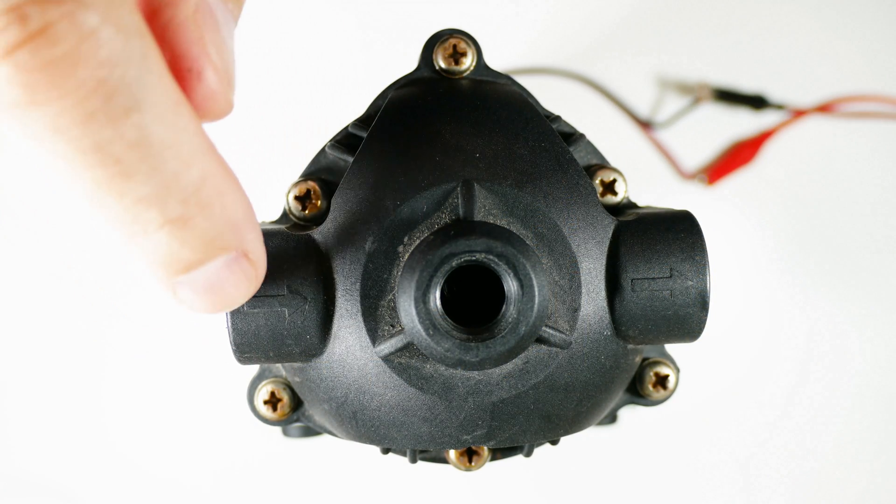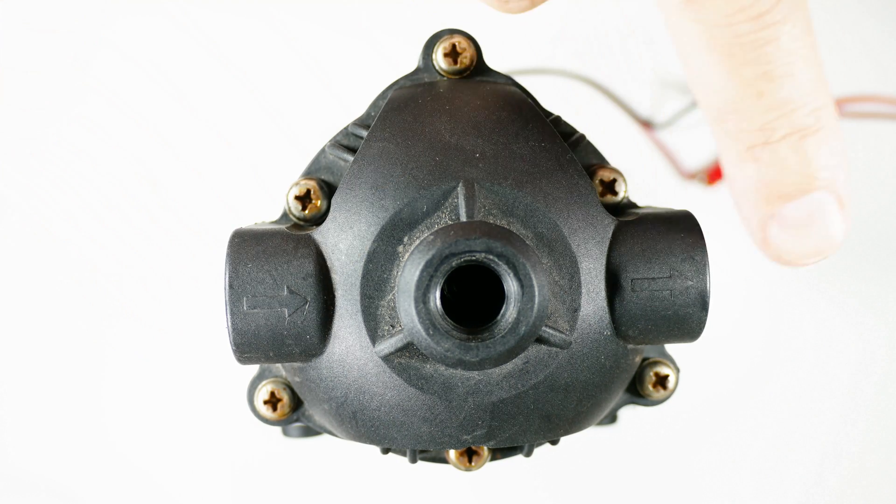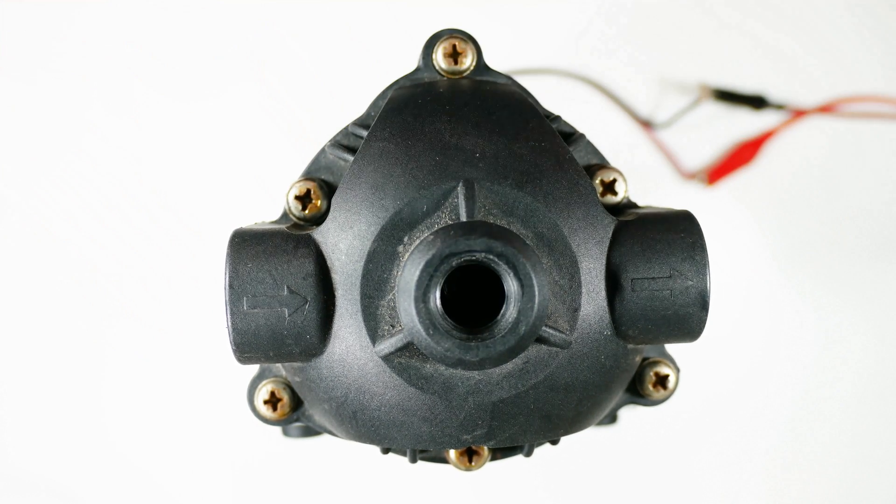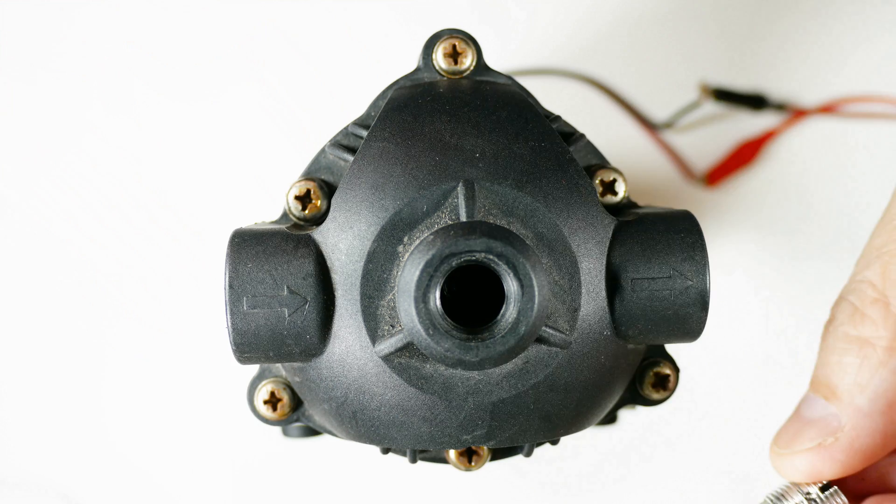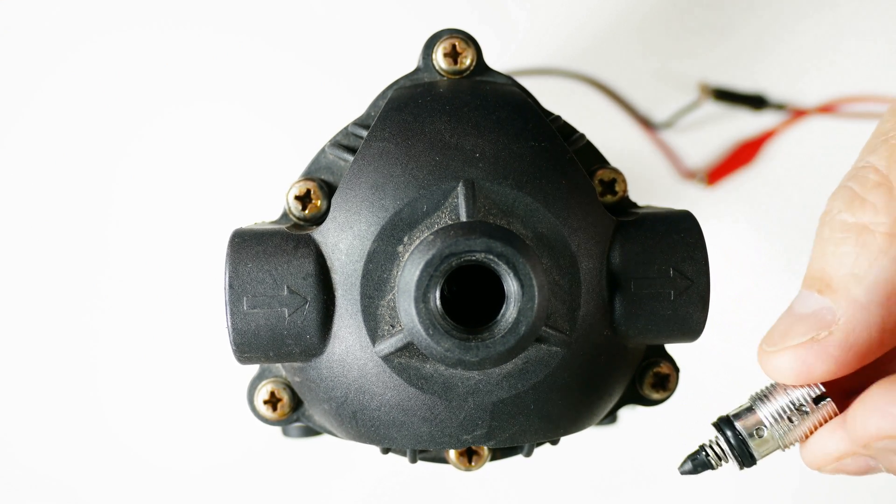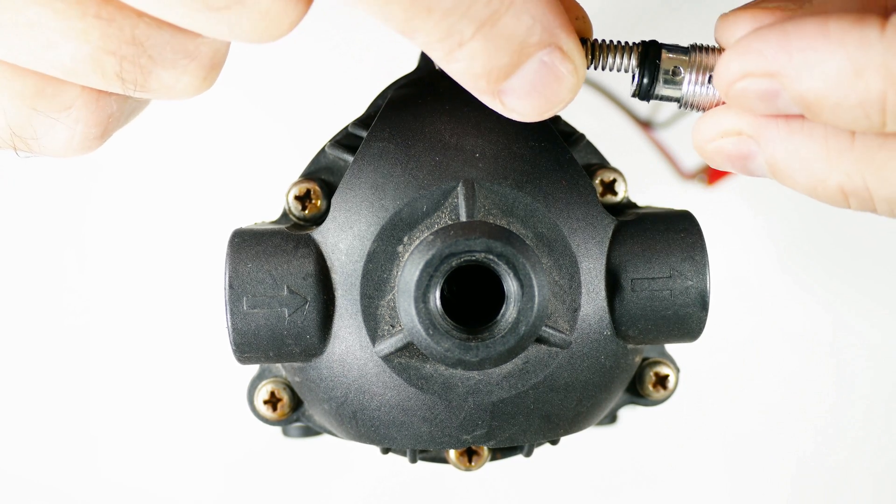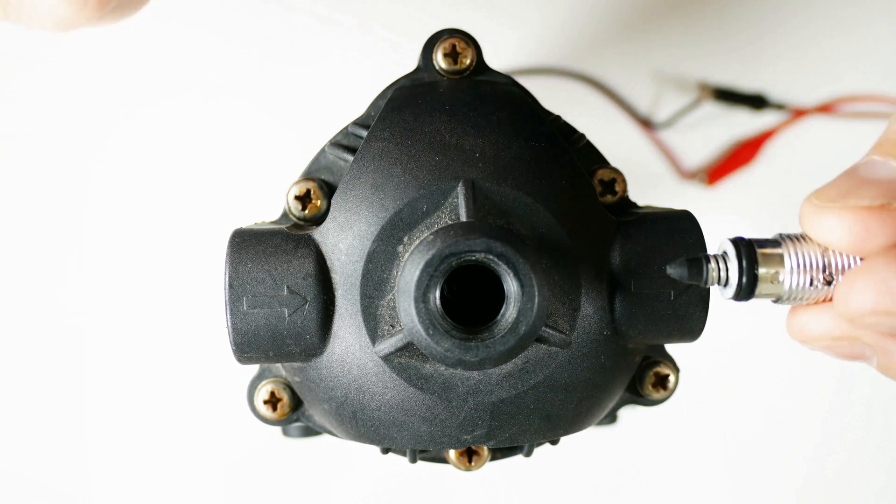This is a view of the top of the pump. This is the inlet - water comes in here, comes out here. This hole right here normally has this screw in front of it and this sets the pressure, so it's a spring loaded valve.